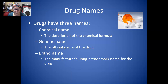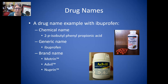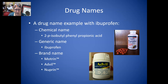Drugs have three names: a chemical name, a generic name, and a brand name. The chemical name is the description of the chemical formula. The generic name is the official name of the drug. The brand name is the manufacturer's unique trademark name. For example, with ibuprofen: the chemical name is 2-isobutyl phenylpropionic acid, the generic name is ibuprofen, and some brand names are Motrin, Advil, and Nuprin.